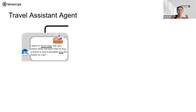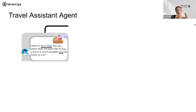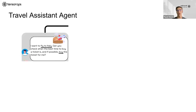I wanted to bring a concrete example: a travel assistant agent. The user says, 'I want to fly to Italy. Please check when's the best time to buy a ticket, and if possible, buy the ticket for me.' If you were to go with this question to a normal chatbot like ChatGPT, maybe it would tell you to avoid summer because too many people would be there, but it's not basing itself on live data — it's just making assumptions, and it cannot actually buy the ticket. That's the difference with agents.